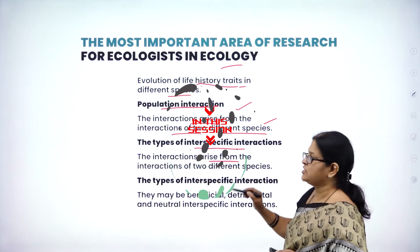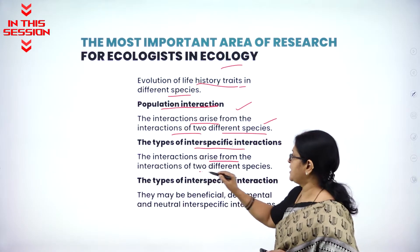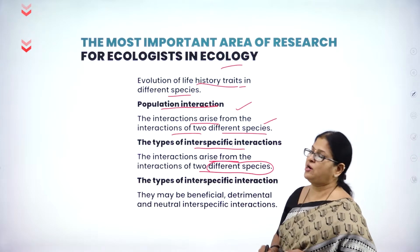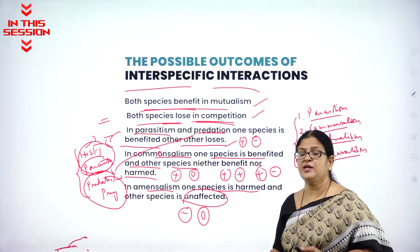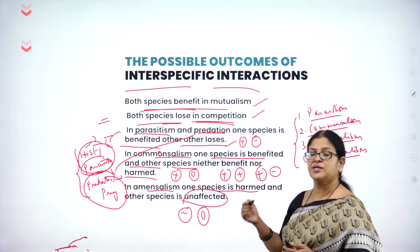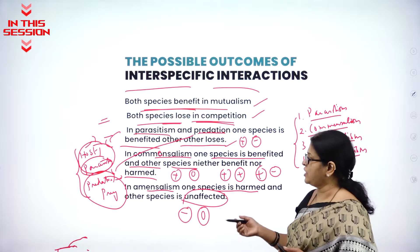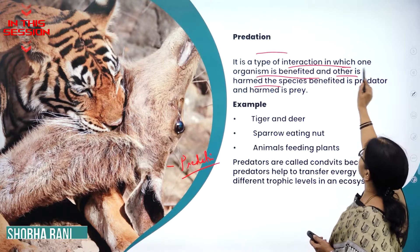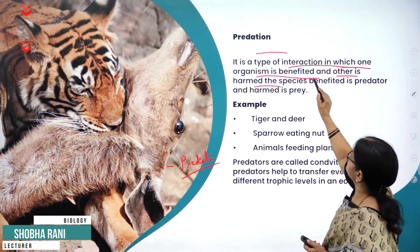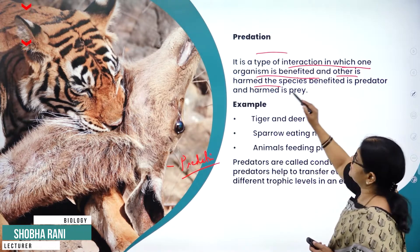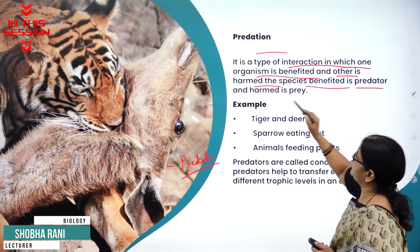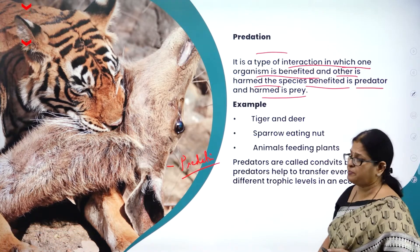The interactions that arise from two different species are called interspecific. In commensalism, one is benefited and the other is neither benefited nor harmed. Predation is a type of interaction in which one organism is benefited and the other is harmed. The species benefited is the predator and the one which is harmed is the prey.